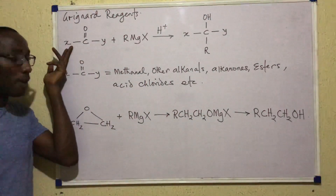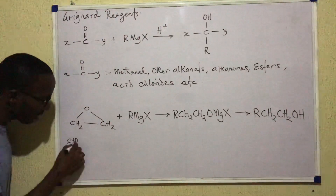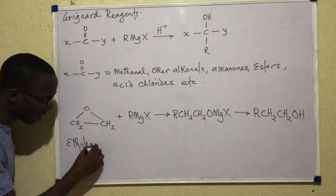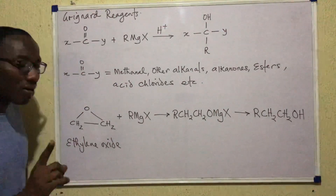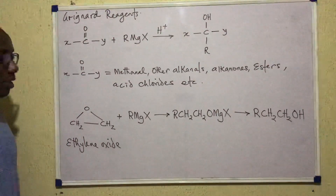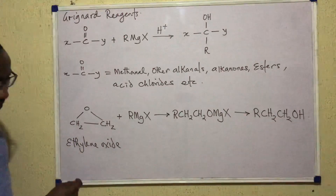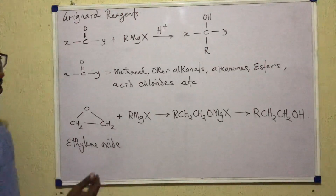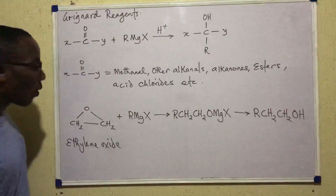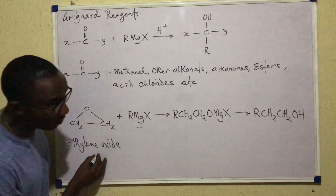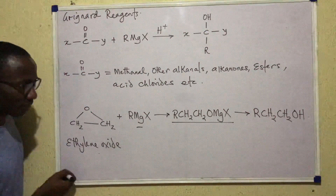Apart from these compounds, there is a special compound called ethylene oxide. Ethylene oxide can also be used to make alcohols — primary alcohols precisely — when it reacts with a Grignard reagent. So: Grignard reagent plus ethylene oxide gives a primary alcohol as the final product.